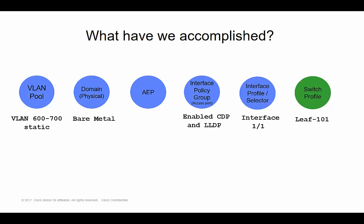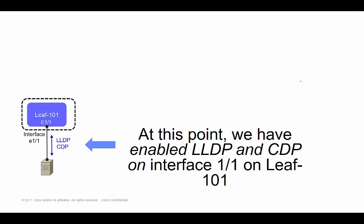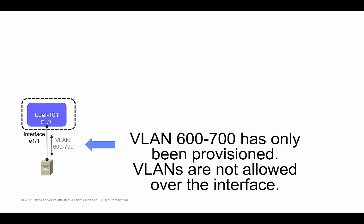Let's look at an actual visual representation of the configs we actually did. So far, LLDP and CDP are enabled on interface 1/1 on LEAF 101. But VLANs 600 through 700 have not necessarily been trunked over the interface. This is why I said when you see the word 'profile,' think of potentially applying configuration — because there are some additional steps that have to be done to get these VLANs up and running over the interface. We'll talk about those additional steps in a later lecture.